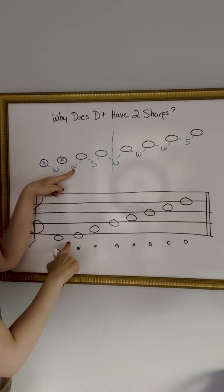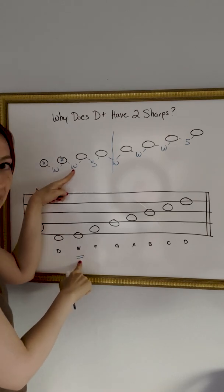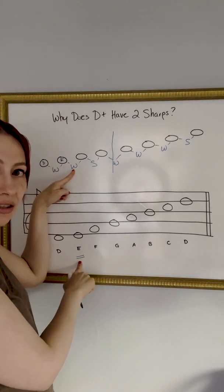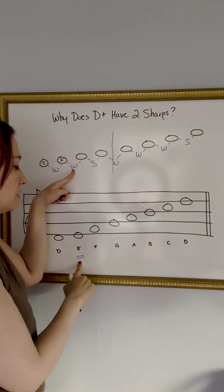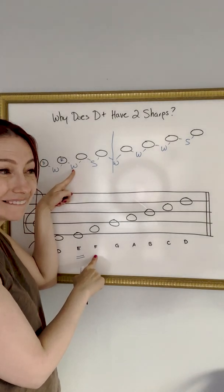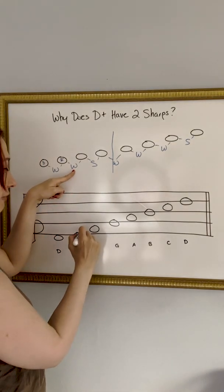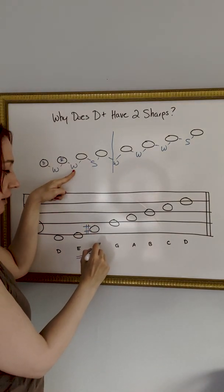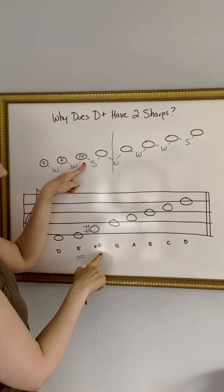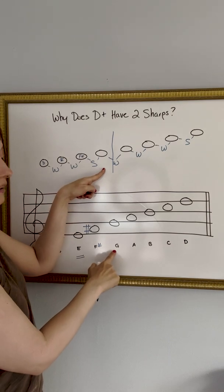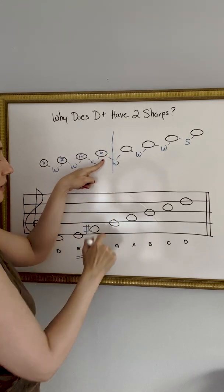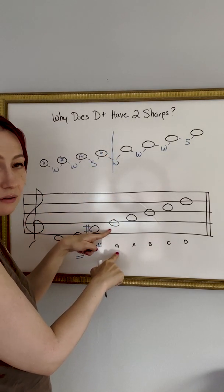Next in the formula is a whole tone, so we need to find a whole tone up from E. But E and F are right beside each other on the piano — they're a semitone apart. So we need to adjust the F to be a whole tone away. We do that by adding a sharp to the F. Now E to F sharp is a whole tone. From F sharp, a G is conveniently a semitone away, so the semitone brings us right to G. We can leave that note the way it is.